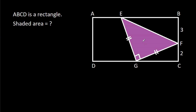In this video, we have been given a right-angle encounter inside a rectangle ABCD, where BF is 3, CF is 2, and EG is equal to FG. We have to find the shaded area.